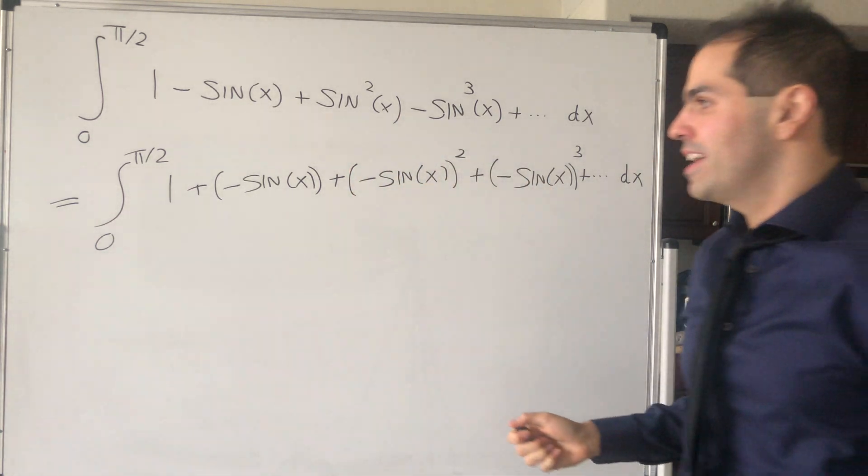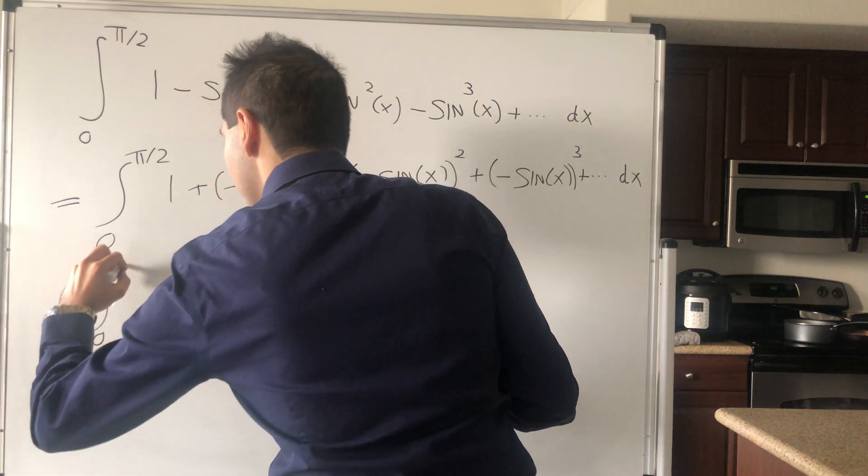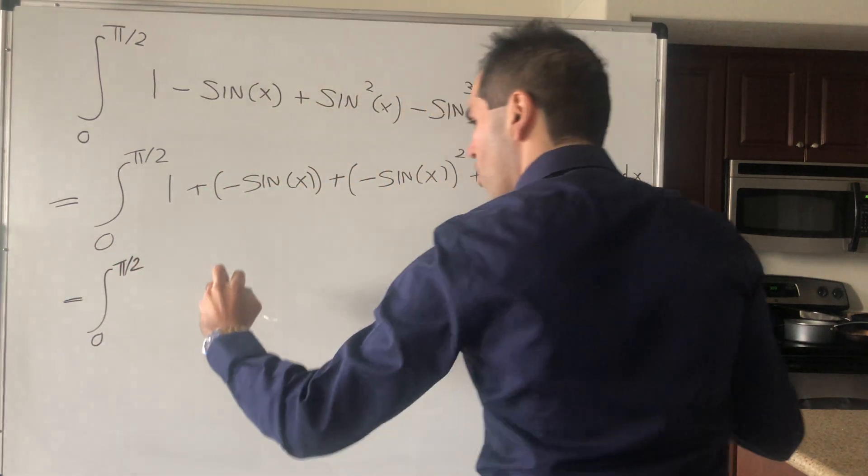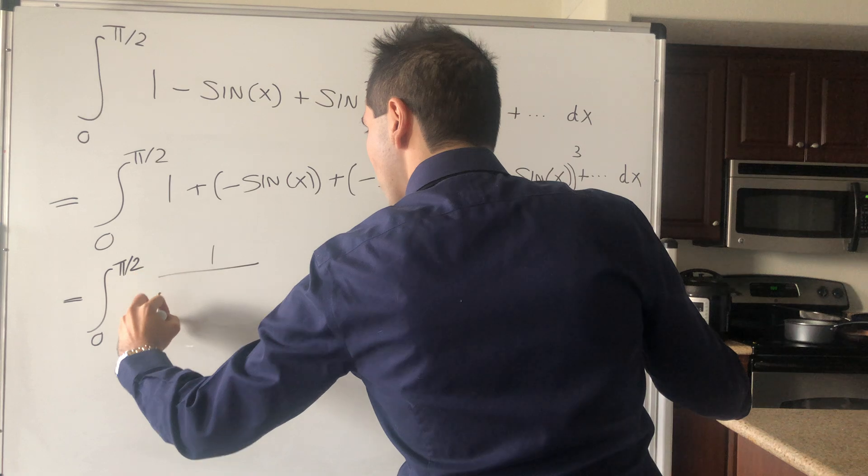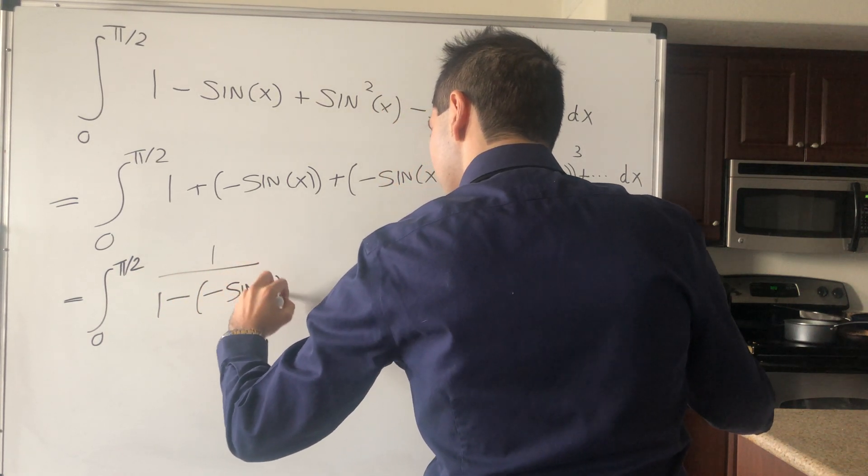So this just simplifies to the integral from 0 to pi over 2 of 1 over 1 minus minus sin of x, dx.